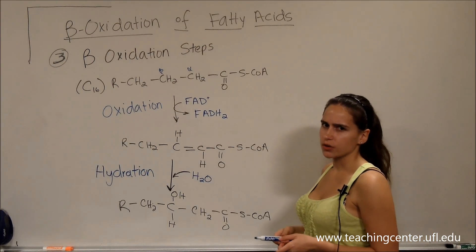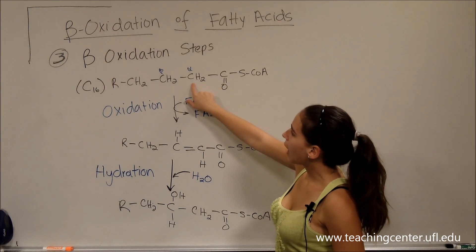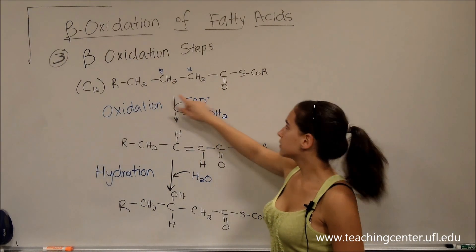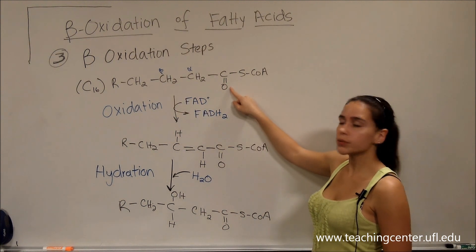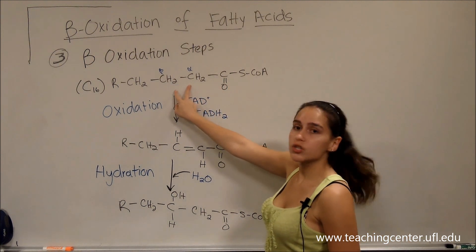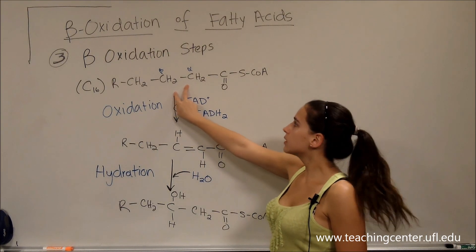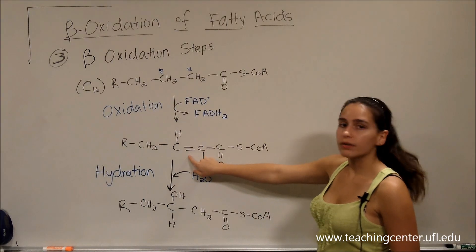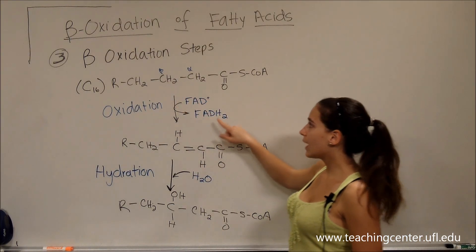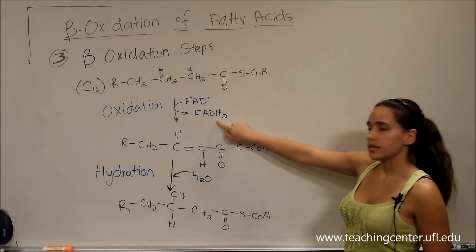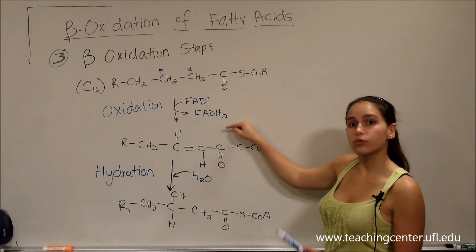How can we tell this from the structure though? Our alpha and beta carbons, that is the first and second carbons from the carbonyl group, are going to lose two H's. Losing two H's means it's going to be oxidized, and we're going to have a double bond. The two H's are going to be gained by FAD, and it's going to become FADH2. FAD was reduced.